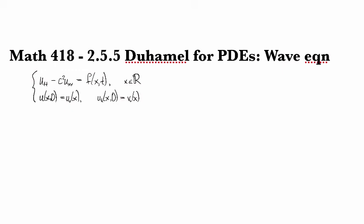To express the solution to the non-homogeneous wave equation, we can use Duhamel's principle again. So here note I've got the initial position given by u0 and the initial velocity given by v0.